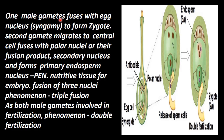One male gamete fuses with the egg cell — the egg nucleus. The egg cell, along with two synergids, forms the egg apparatus. These gametes are discharged from the pollen tube, and one male gamete combines with the egg cell to form a zygote.